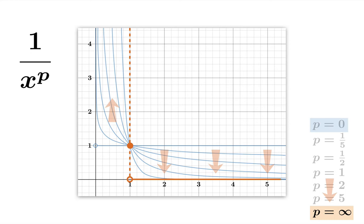The left-hand side isn't really a function in the limiting case as p approaches infinity. For example, here's the case y equals 1 over x to the 30, which is very close to this L-shape. Please be aware that this graph actually passes the vertical line test everywhere — it just goes very steep quickly to the left of 1. But to the right, the function approaches 0 quite quickly, and you can almost see the constant function 0 on the right side.